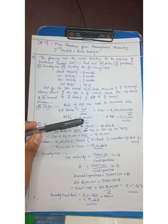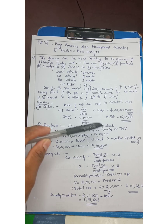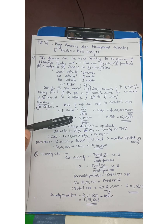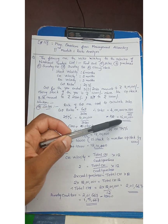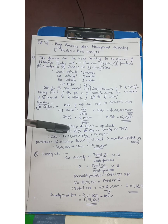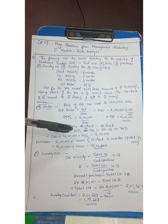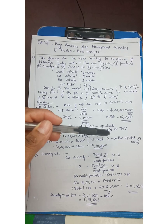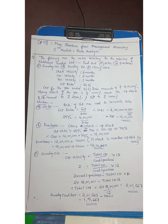Purchases equal cost of goods sold plus closing stock minus opening stock. In sales we have 16,00,000 and 25% is the gross profit. So 75% of 16,00,000 gives us 12,00,000. The cost of goods sold is 12,00,000.